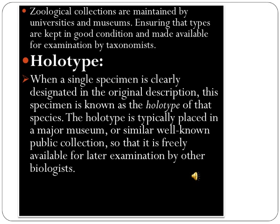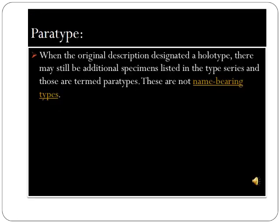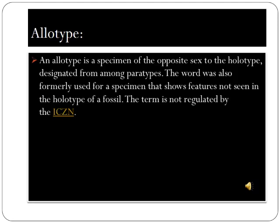When the original description designates a holotype, there may still be additional specimens listed in the type series; those are termed paratypes. An allotype is a specimen of the opposite sex to the holotype. The word was also formally used for a specimen that shows features not seen in the holotype of a fossil.